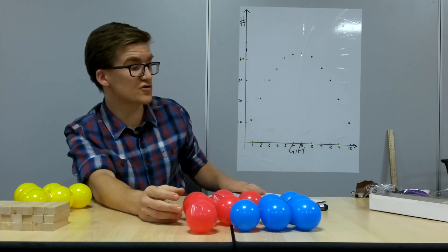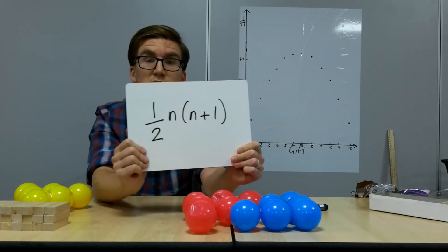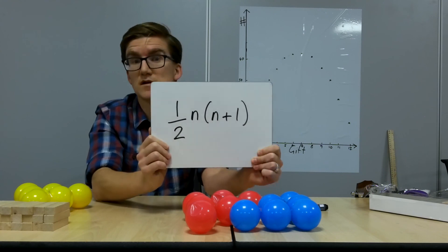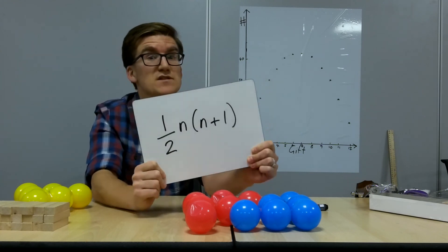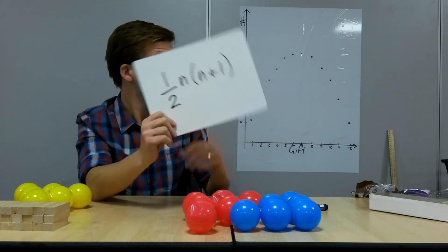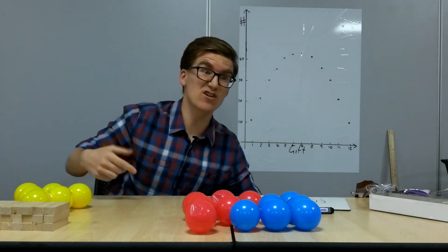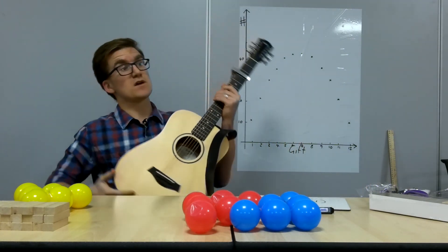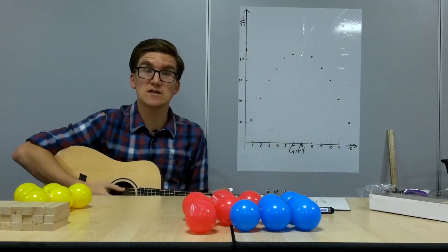And this is the formula for triangular numbers or the sum of natural numbers up to a point, which is a half n times n plus one. So next time you're at carol singing, if you want to get quicker to the end of this song and get your money a bit more quickly, you don't really need to sing it right the way through to the end. You can just use that next time.